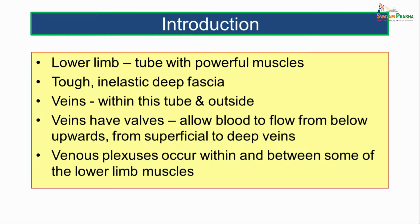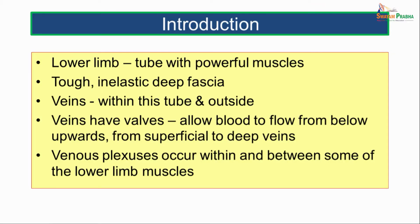Introduction. The lower limb, as we all know, is a tubular structure with powerful muscles. These muscles are held together by a tough inelastic deep fascia which covers the limb like a stocking — that is what we call the fascia lata. The veins of the lower limb lie within this tubular structure or outside the fascia lata.